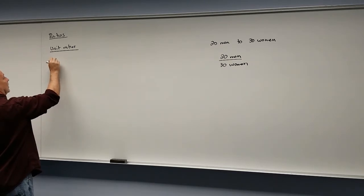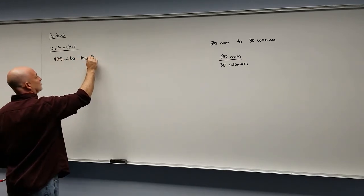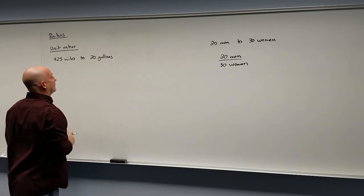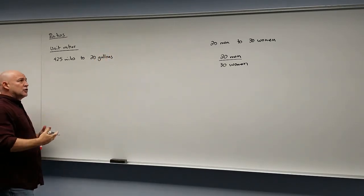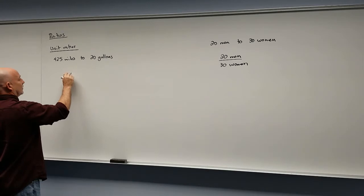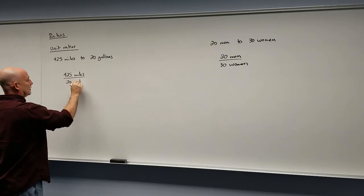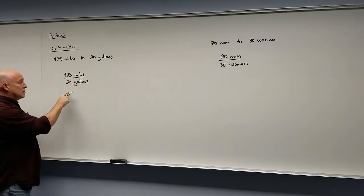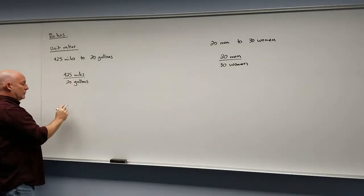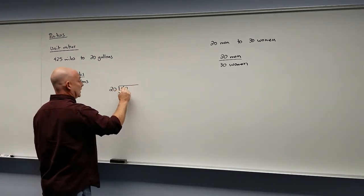Let's say that your car gets 425 miles to 20 gallons. Now this is generally not how we're told how far a car can go in gallons, but if we wanted to write this ratio, that would be 425 miles to 20 gallons. To make this a unit ratio, we need to make this a one on the bottom. So basically the idea, we just need to divide both of these by 20. So actually do the division, 20 into 425.